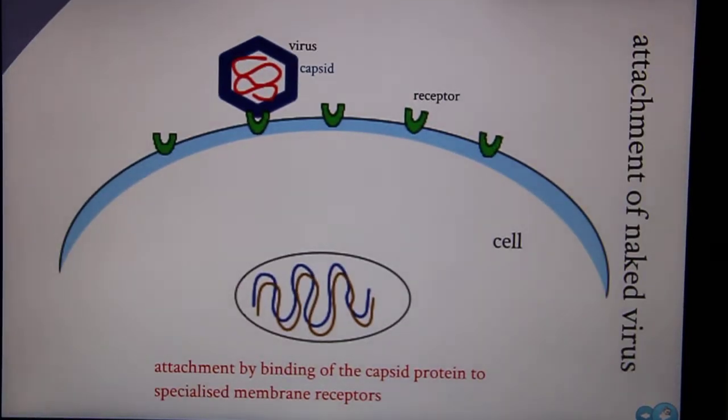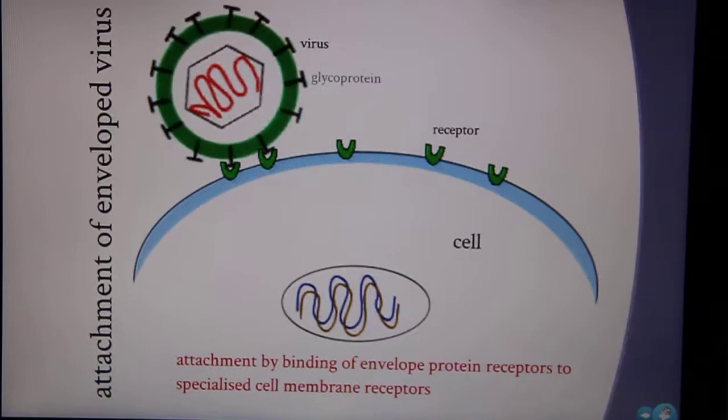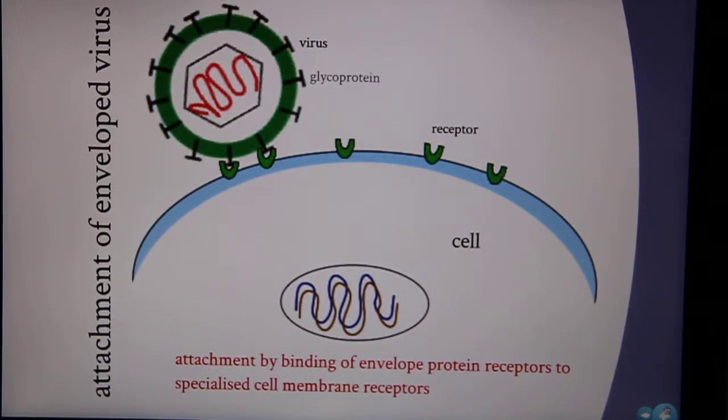Naked viruses achieve attachment by binding of their capsid to special membrane receptors. Enveloped viruses use protein receptors on their envelope to bind to cell membrane receptors.